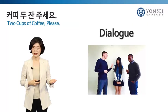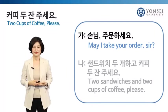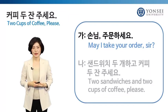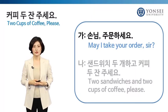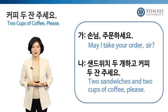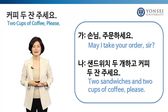Let's look at the dialogue first. One person is ordering in a cafe. Listen carefully. The waitress says, 'May I take your order, sir?' Literally, the sentence means 'sir, order please.' The customer replies: 'Two sandwiches and two cups of coffee, please.' Please listen again.